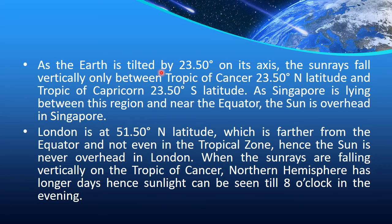So you will write your answer as: as the Earth is tilted by 23°30' on its axis, the sun rays fall vertically only between the Tropic of Cancer (23°30' north latitude) and the Tropic of Capricorn (23°30' south latitude). As Singapore lies between this region near the equator, the sun is overhead in Singapore. London is at 51°30' north latitude, which is farther from the equator and not in the tropical zone. Hence the sun is never overhead in London. When the sun rays fall vertically on the Tropic of Cancer, the northern hemisphere has longer days, so sunlight is seen till 8 o'clock in the evening because London lies in the northern hemisphere.